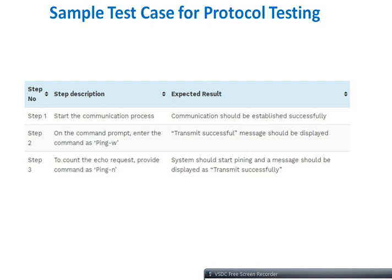Sample test cases for protocol testing: Step 1 — start the communication process; expected result: communication should be established successfully. Step 2 — on the command prompt, enter the command 'ping' followed by the IP. Expected result: a transmit successful message should be displayed. To count echo requests, provide the command 'ping -n'; the system should start pinging and display the transmit message.